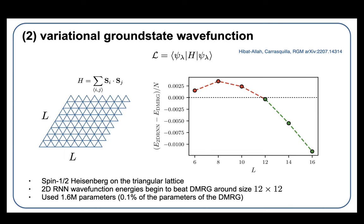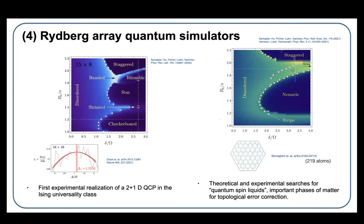[Question about entanglement estimation using mutual information] Are you talking about dividing the system into region A and B? That's a good question - how well it estimates things like entanglement. I mean, it's a function of training, but we routinely use these methods. Let me show you another example.